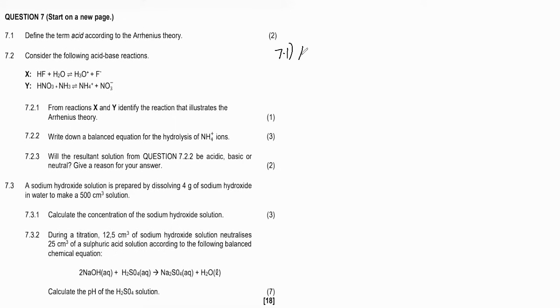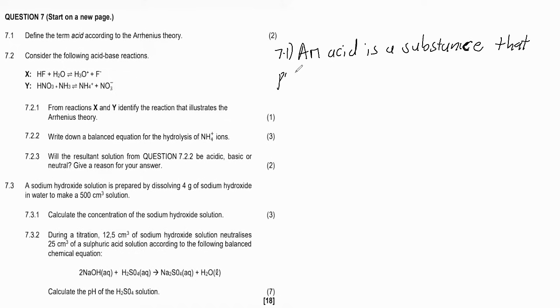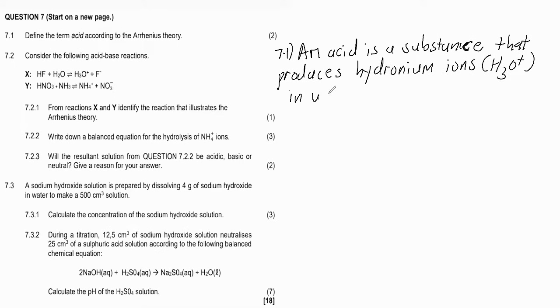We have question 7 on acids and bases. 7.1 says: define the term acid according to the Arrhenius theory. An acid is a substance that produces hydronium ions (H₃O⁺) in water. That's how you're expected to define your acid according to the Arrhenius theory.